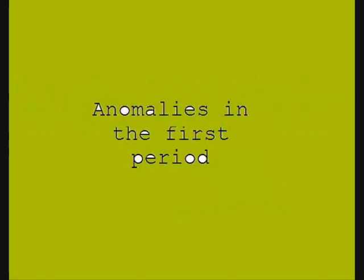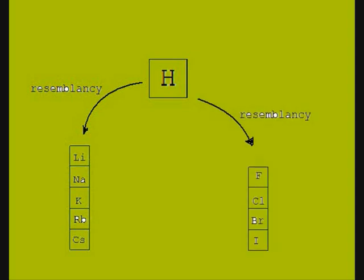Anomalies in the first period. I left this concept at the end because hydrogen, the only active non-metal in the first group, resembles equally to alkali and to halogens.